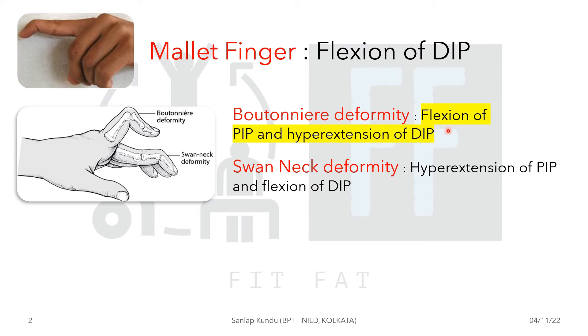The third deformity is swan neck deformity. It is just the opposite of boutonière deformity — that is, hyperextension of the PIP joint and flexion of the DIP joint.